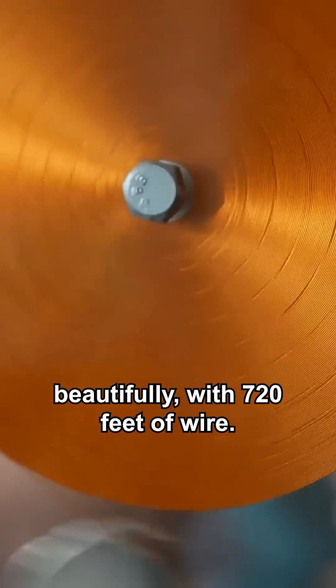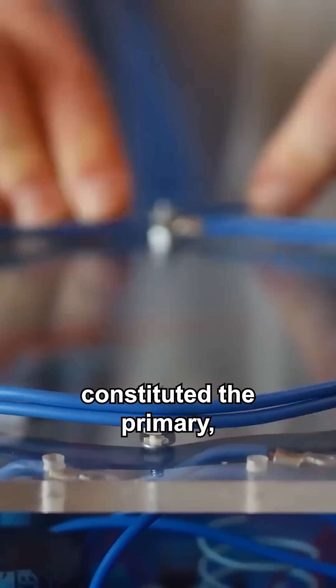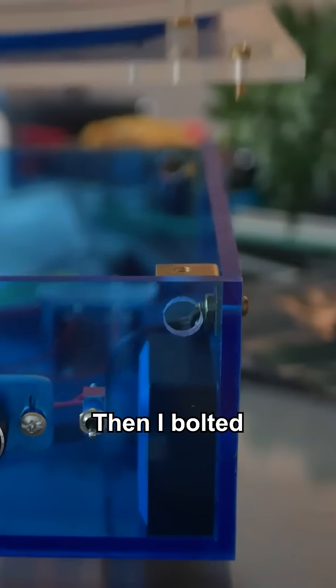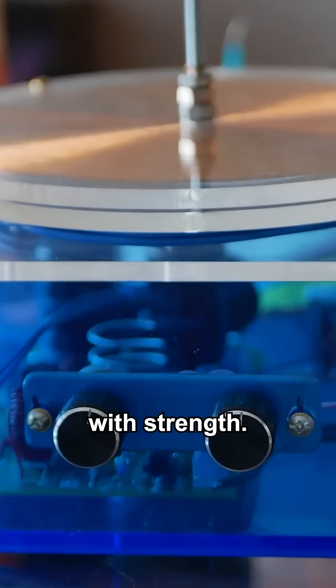The secondary turned out beautifully with 720 feet of wire. Seven turns of wire constituted the primary, which were held in position under the secondary by these bolts. Then I bolted both the secondary and primary together onto the top of the base, which blended function with strength. The outer turn of the secondary connected to electrical ground through one of the mounting bolts.